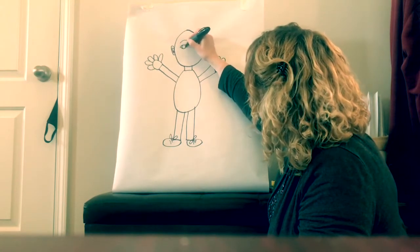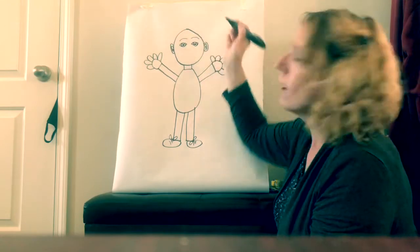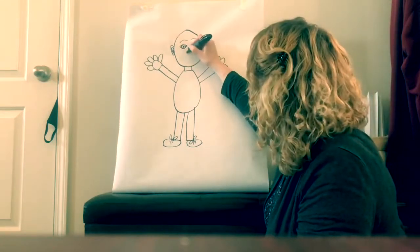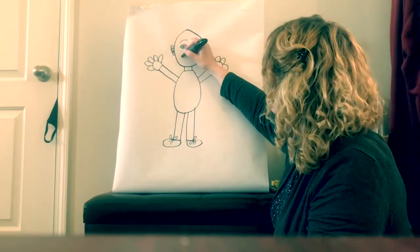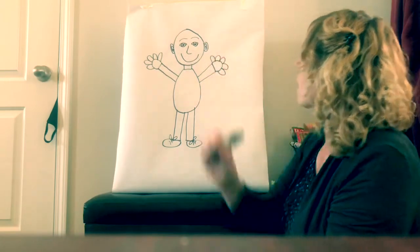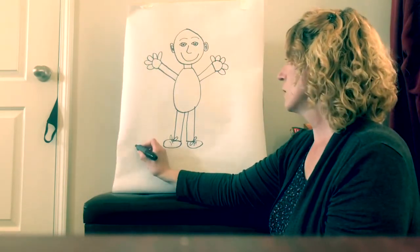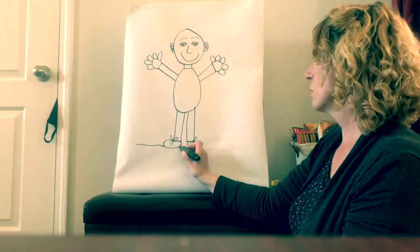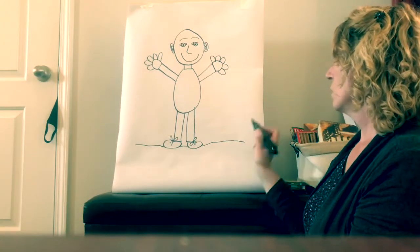Dot for his pupil. And then he needs a nose. And a mouth. And then he needs to be standing on the ground. So I've got to put his ground down there.